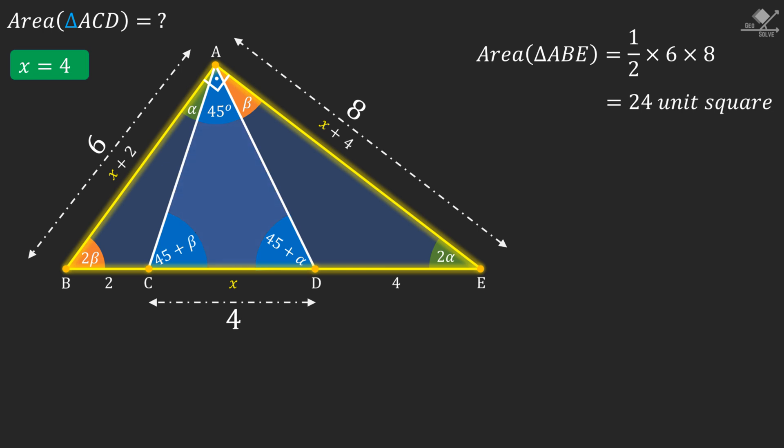But we are asked the area of the middle triangle. We know that these three triangles have same height but different base lengths. So they will share this area with respect to their base lengths.